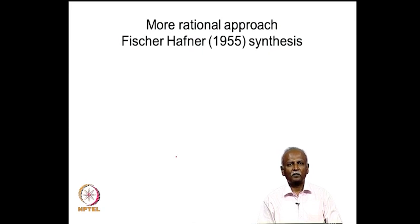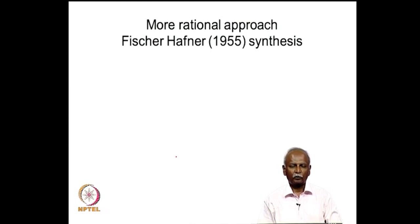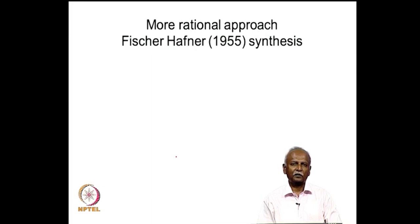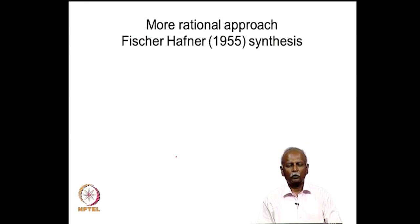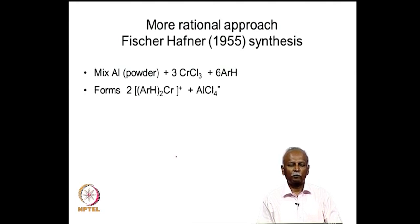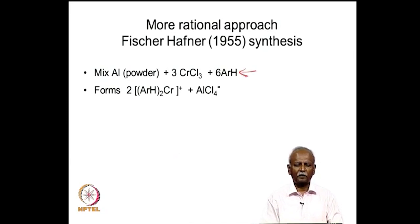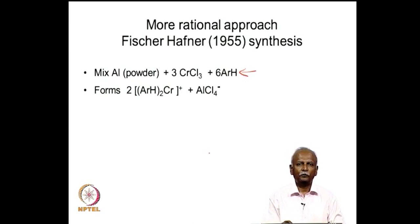A more rational synthesis emerged after the synthesis of ferrocene and analysis of its structure. Fisher realized that it should be possible to make metal complexes where a benzene ring would be used instead of the cyclopentadienyl anion, which is aromatic and has 6 pi electrons. The two systems - cyclopentadienyl anion and the benzene ring - should be isolobal or similar enough to replace one another. The Fisher-Hafner synthesis was carried out in 1955, using aluminum powder and chromium trichloride in the presence of an aromatic ring. The cationic form of the sandwich complex was formed in the reaction mixture.